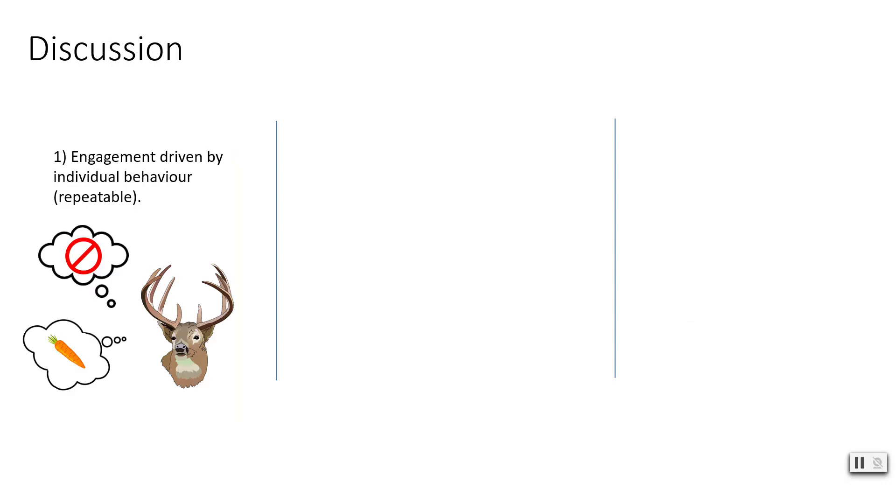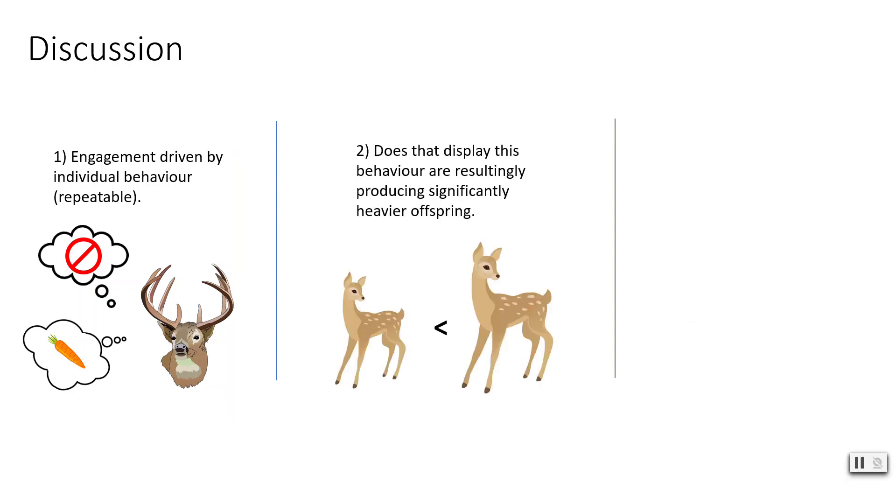Overall, our results show clearly for the first time that consistent engagement with these human wildlife feeding interactions is not simply opportunistic, but instead is driven by the individual's behaviour. Additionally, those females that consistently approach and accept from humans are producing significantly heavier fawns than those who do not. This indicates that these females who accept food from humans may be gaining an unfair advantage when it comes to reproductive success, as the excess nutrition they extract from these additional food items allows them to invest more heavily in in utero fawn development.